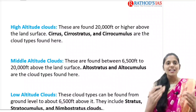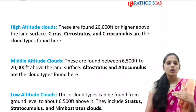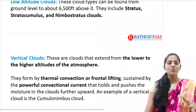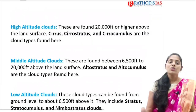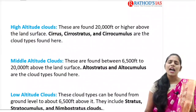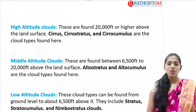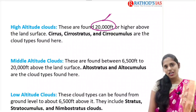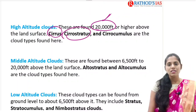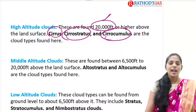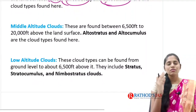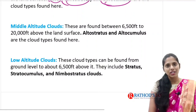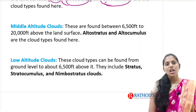High altitude clouds are mainly found at 20,000 feet or higher above the land surface, and we can see cirrus, cirrostratus, and cirrocumulus. Middle clouds are mainly seen at 6,500 to 20,000 feet, and we can see altostratus and altocumulus.